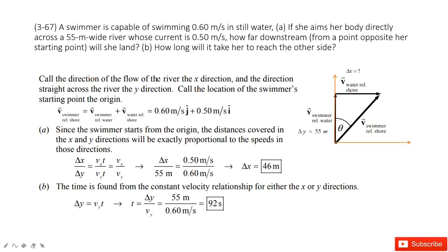So for this one, from relative velocity, it's very easy to understand. The velocity of the swimmer to the shore equals the velocity of the swimmer to the water plus the velocity of the water to the shore. This is called the relative velocity equation.